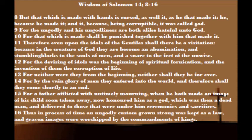Again, in Wisdom of Solomon chapter 14, verse 12, it reads: 'For the devising of idols was the beginning of spiritual fornication, and the invention of them, the corruption of life.' Even more is revealed in Wisdom of Solomon chapter 14, verse 15: 'For a father afflicted with untimely mourning, when he hath made an image of his child soon taken away, now honored him as God, and delivered to those that were under him ceremonies and sacrifices.' Right here, you see how this is clearly mourning of a father — Rodrigo Borgia — who used his son's image to be used as Christ.